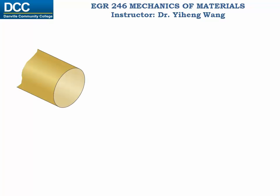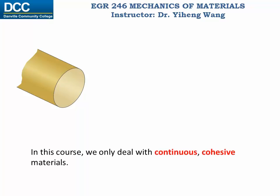Let's look at the cross-section of a solid shaft. In this course we limit our discussion to continuous cohesive materials only. This means that the material properties are uniformly distributed within the member, and there is no void, disconnection, or breakage in the material.